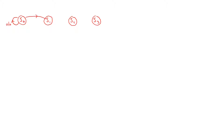We're going to have four states. In S0, if we get a zero as input we get a zero as output and stay in S0. With a one as input we get a one as output and go to S1. For S1, with a zero as input we stay in S1 and output a zero. With a one as input we go to S2 with a one as output.